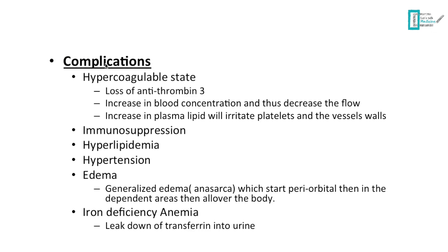For complications: a patient with nephrotic syndrome develops strokes and MI. Why? Because antithrombin 3, a protein that helps prevent clotting, is being lost into the urine. Also the concentration and viscosity of the blood increase, leading to decreased flow — the blood becomes static and more thrombus is generated. Additionally, increased plasma lipid irritates the platelet surface as well as the vessel wall, causing platelets to stick together and form thrombus.